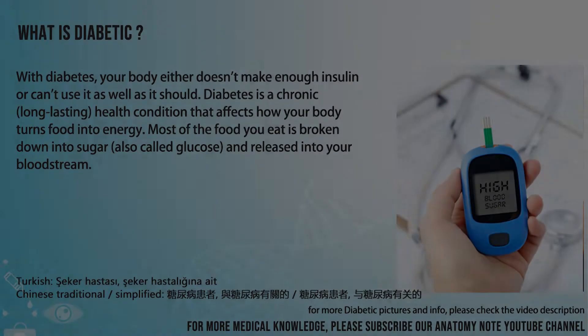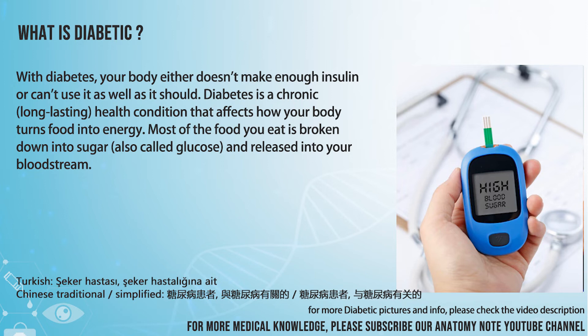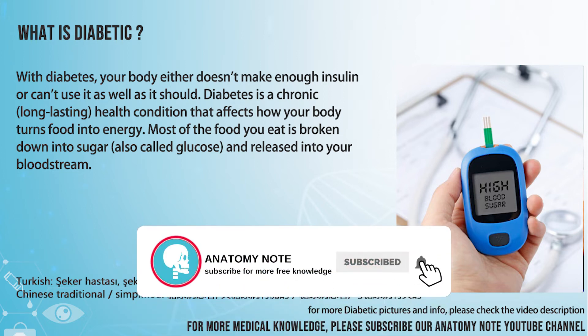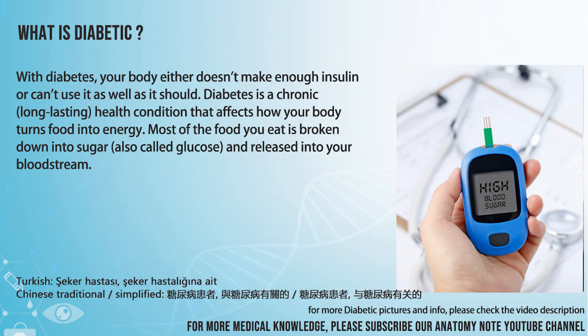With diabetes, your body either doesn't make enough insulin or can't use it as well as it should. Diabetes is a chronic, long-lasting health condition that affects how your body turns food into energy. Most of the food you eat is broken down into sugar, also called glucose, and released into your bloodstream.